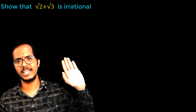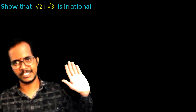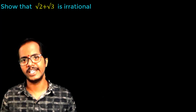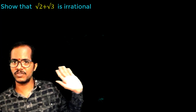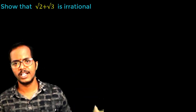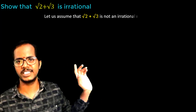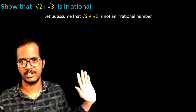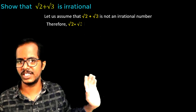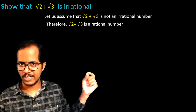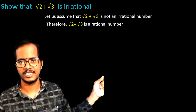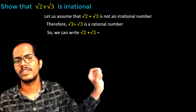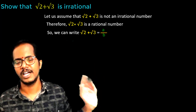Prove that square root 2 plus square root 3 is an irrational number. Let us prove it using the contradiction method. First, we need to assume that the statement which we need to prove is false. So we assume root 2 plus root 3 is not an irrational number, meaning it is a rational number. We can write square root 2 plus square root 3 equals to a by b, where a and b are co-prime and b is not equal to 0.